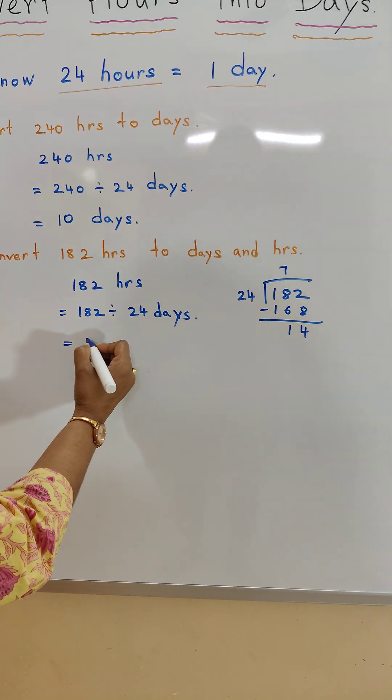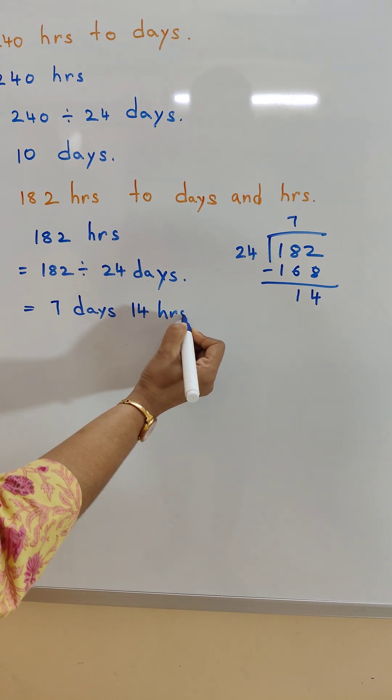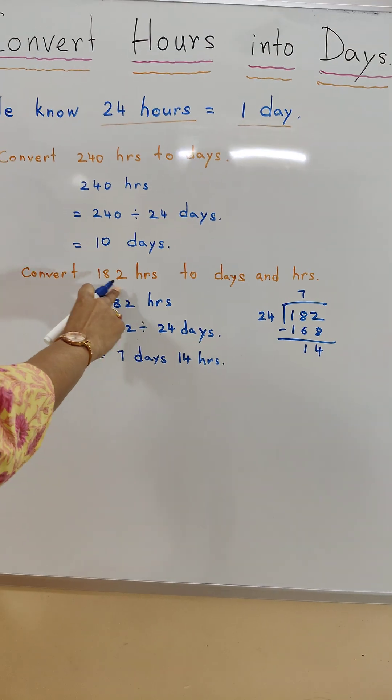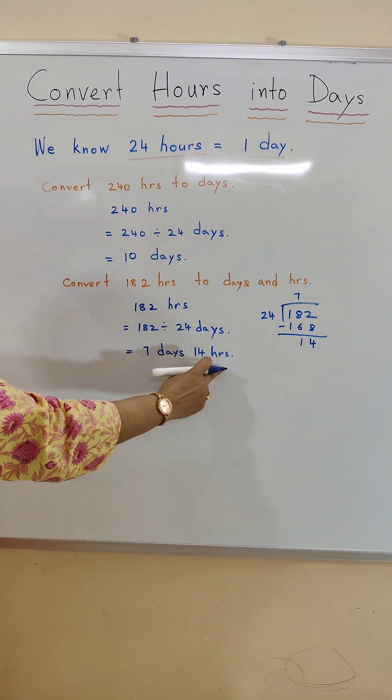So our answer is 7 days 14 hours. When we convert 182 hours, we get 7 days 14 hours.